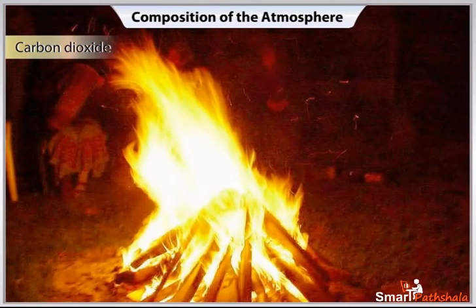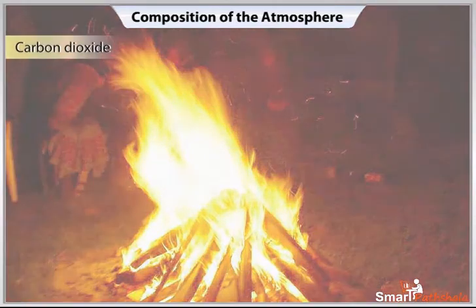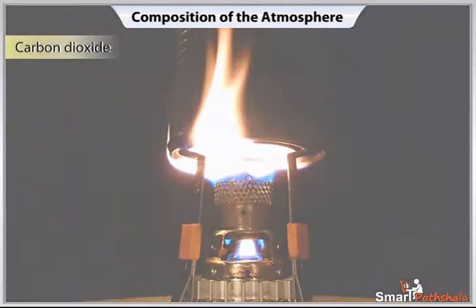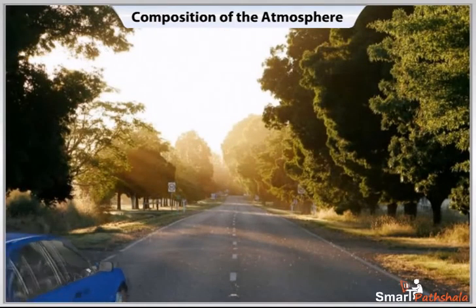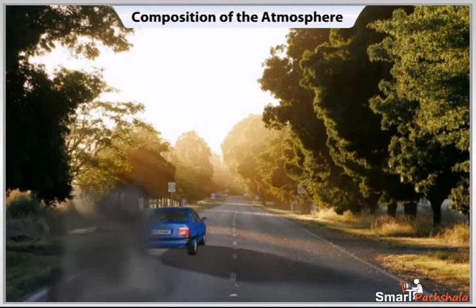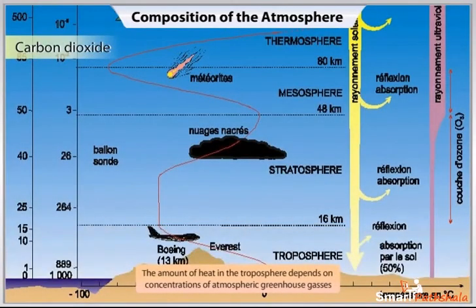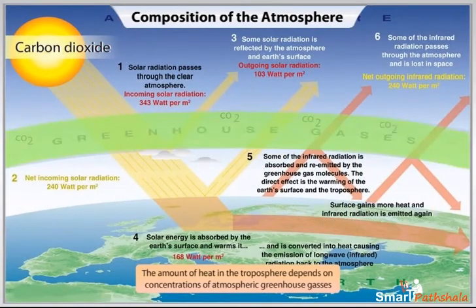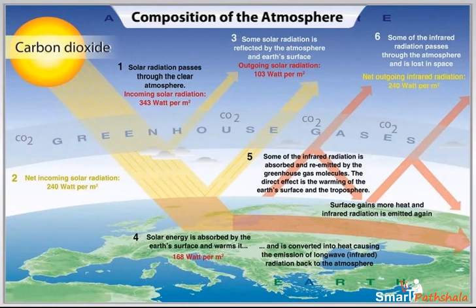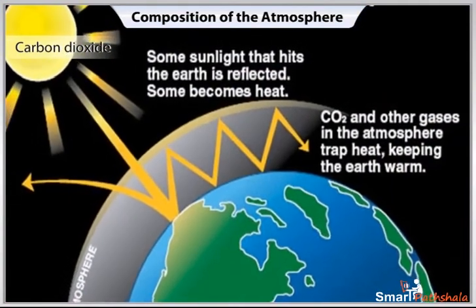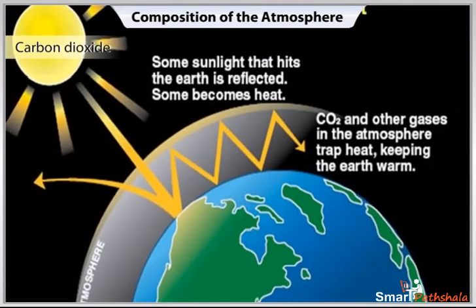However, the balance is upset by burning of fuels such as wood, coal and oil. They add billions of tons of carbon dioxide into the atmosphere each year. The amount of heat in the troposphere depends on the concentration of atmospheric greenhouse gases such as carbon dioxide. As a result, the increased volume of carbon dioxide is affecting the earth's weather and climate.